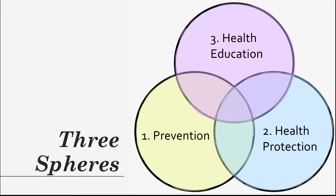The second sphere is health protection. Health protection focuses on legal controls and policies, as well as voluntary practice methods, that are aimed at preventing ill health and enhancing one's well-being. Common examples of health protection are workplace smoking policies that prohibit smoking indoors. Tannehill asserts that health protection also includes public policies that address fair access to housing, employment, education, and health care.